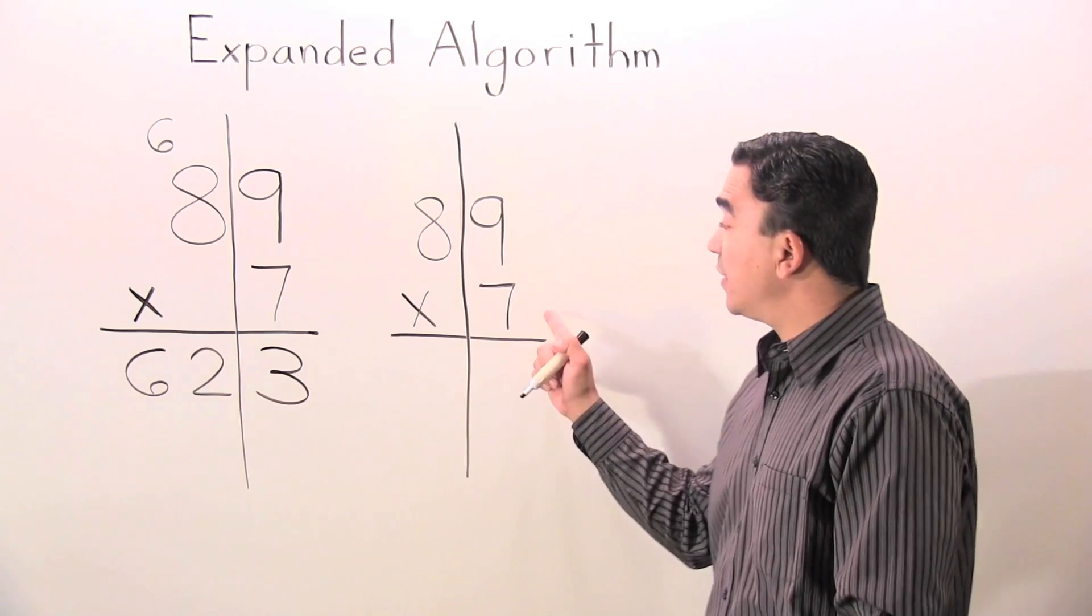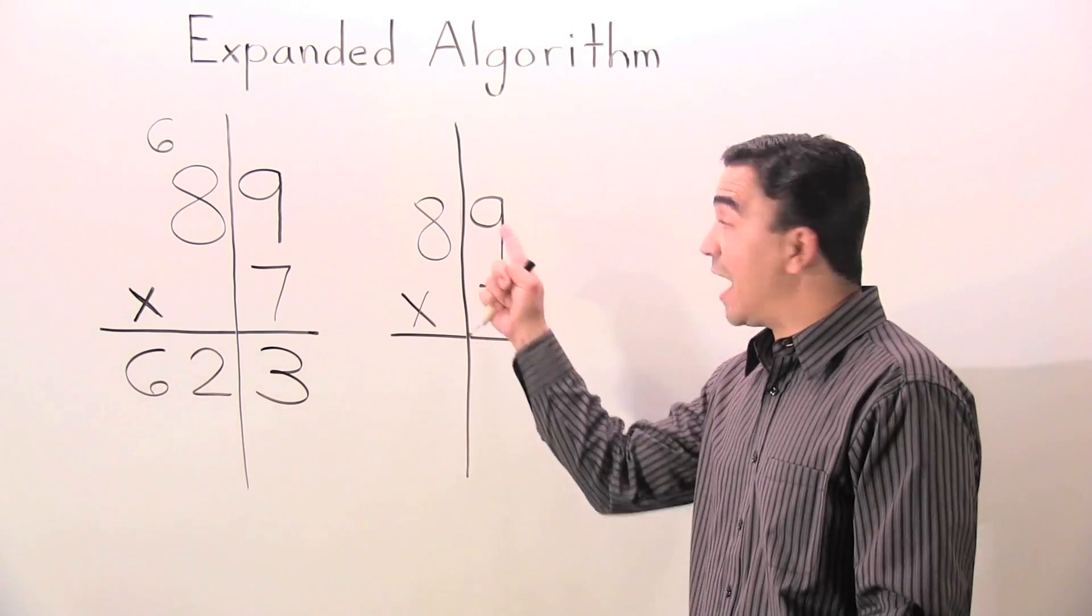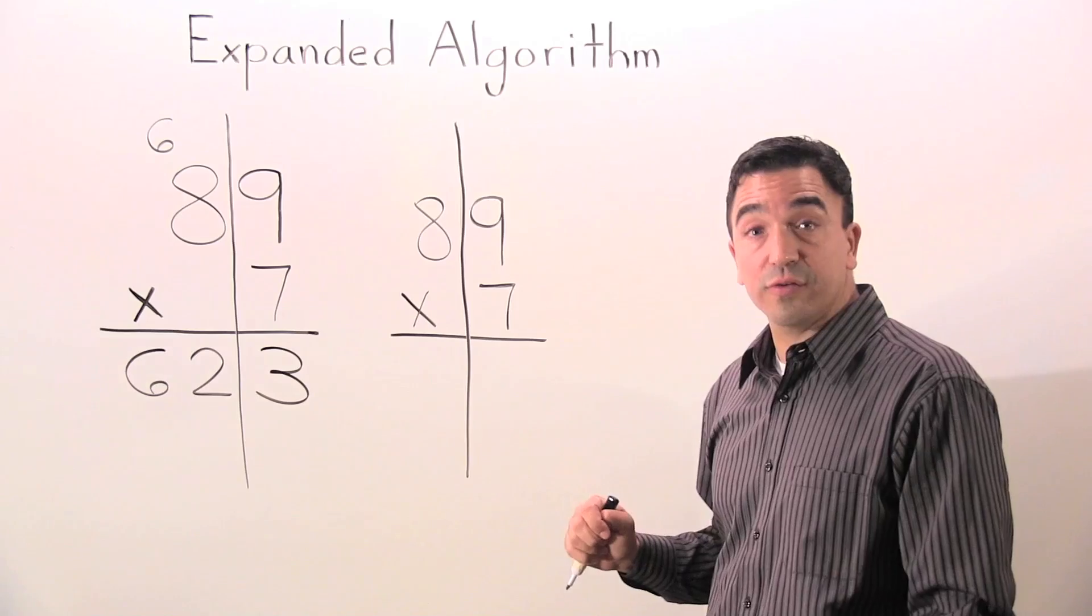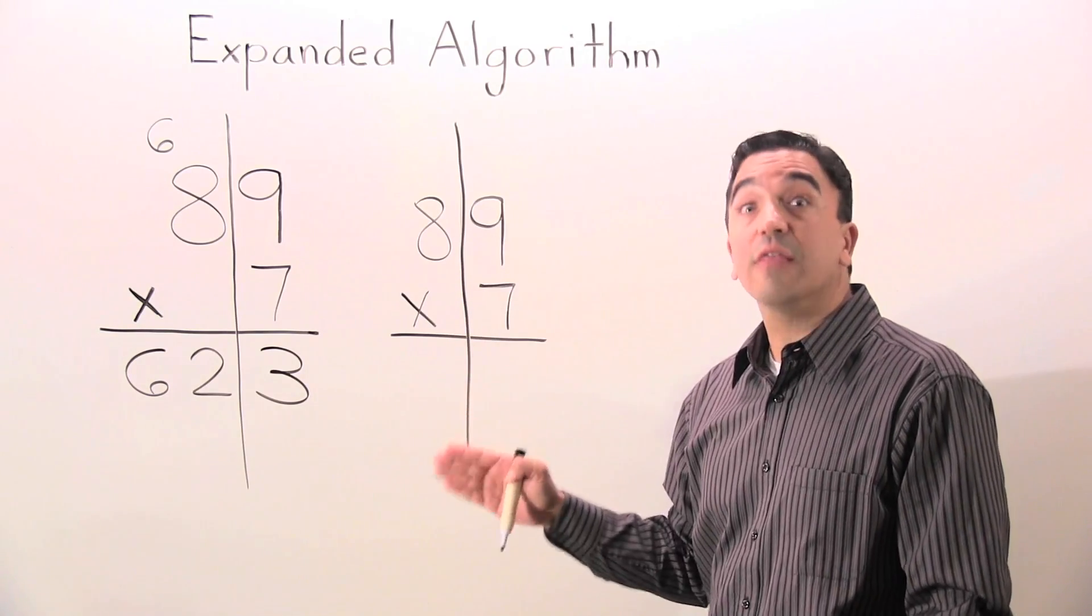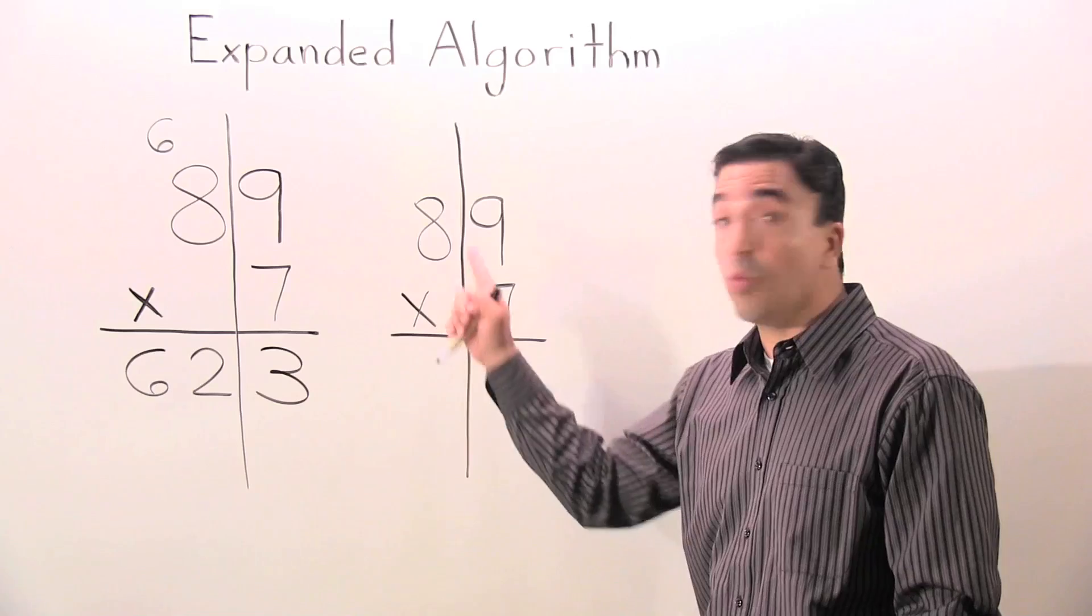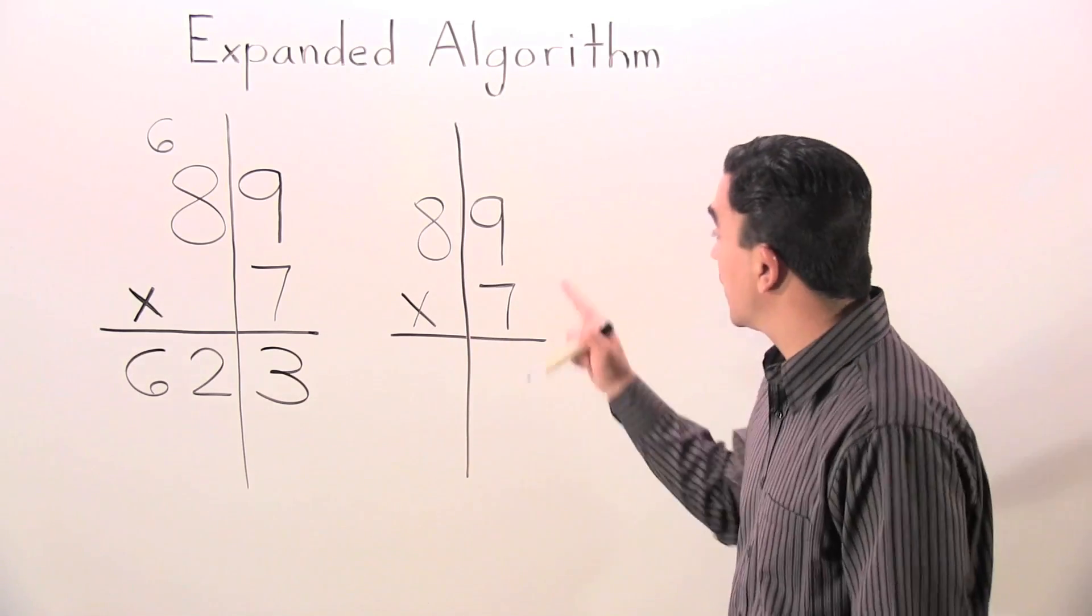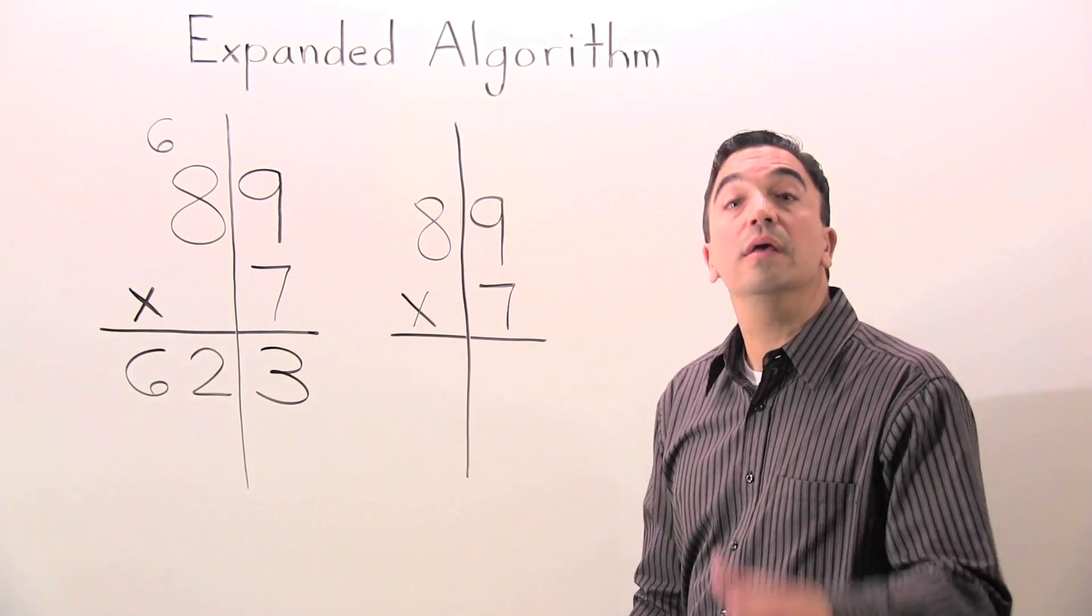So what I'm going to do is I'm going to multiply the 7 times the value of 9, which is in the 1s place, and then I'm going to multiply 7 times 8, the value of 8, in the 10s place, which is 80. Watch. 7 times 9 is 63.